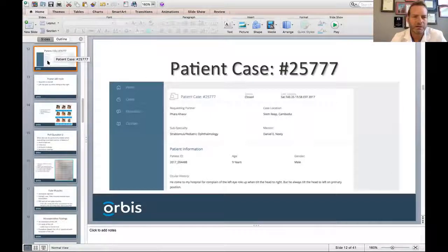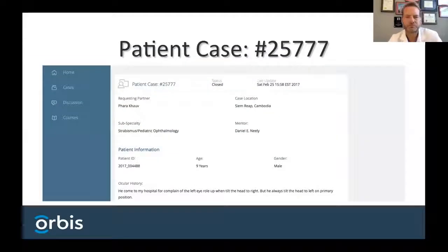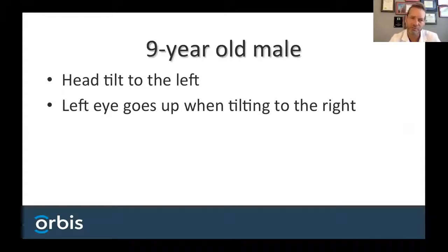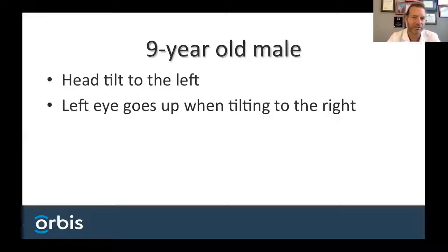Our next case comes from Dr. Farah Kav in Cambodia. This is a nine-year-old male with a history of a head tilt to the left. The complaint is that the left eye goes up when the head is tilted to the right — what sounds like a positive Bielschowsky head tilt test, making us immediately think of superior oblique palsy.